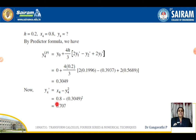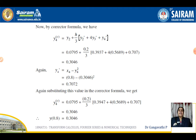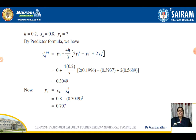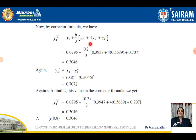Now we use the Corrector Formula: y₄c = y₂ + (h/3)(y₂' + 4y₃' + y₄'). We know y₂' and y₃', and y₄' must be evaluated using the predicted y₄. So y₄' = x₄ − y₄² = 0.8 − (0.3049)² = 0.707. Substituting into the Corrector Formula and simplifying, y₄c = 0.3046.